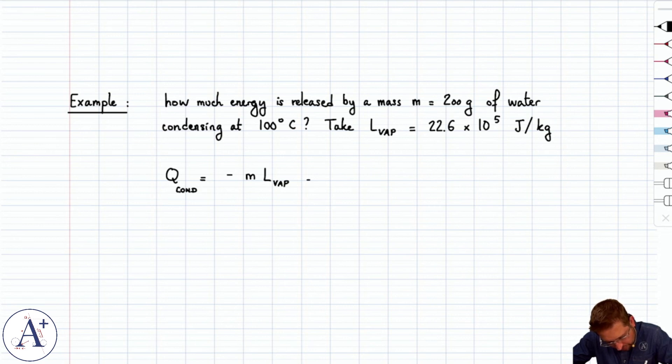And so that's equal to minus, we need 200 grams in kilograms, that's 0.2, 22.6 times 10 to the 5, which is approximately minus 45.2, 10 to the 4 joules.